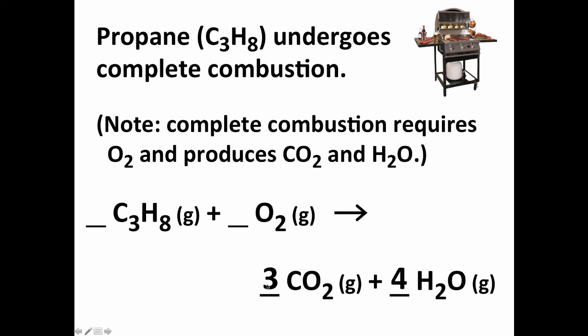And then we note we have three times two, which is six, plus four times one, which is four more. So six plus four is ten total oxygens in the products, which means we need five times two or ten oxygens to start. And that's the correctly balanced equation for the complete combustion of propane.